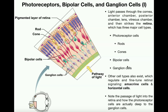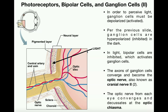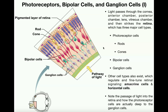Now, before we go any further, I want you to notice something. Light passes through the eye and strikes the retina, but it actually doesn't encounter the photoreceptors first. The photoreceptors are at the back of the eye — they are actually deep to the ganglion cells. So the light has to travel through the ganglion cells, then through the bipolar cell layer, and only then makes contact with the photoreceptors. But it's the photoreceptors that initially detect the light, and then they have an effect on the bipolar cells, which in turn affect the ganglion cells.